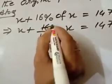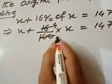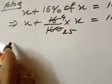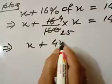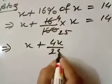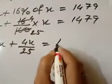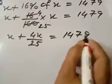Now by 4 you cancel, 4 4 is equal to 16%, and 4 to 25, 100. Or, X plus 4 into X is equal to 1479. Or, X plus 4X by 25 is equal to 1479.